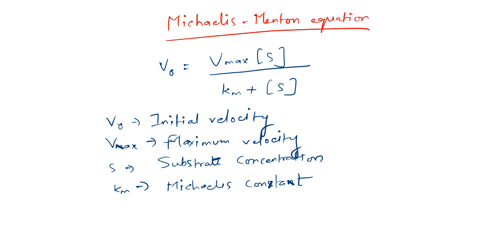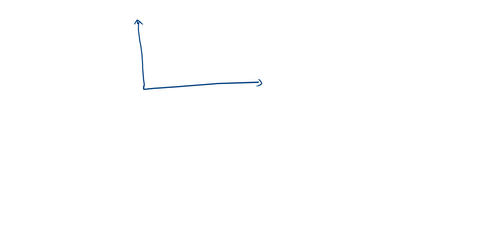To understand the meaning of this equation, we need to look at a particular graph. I am plotting a graph where the y-axis represents the speed of reaction, indicated by v, and the x-axis represents the substrate concentration, indicated by S.